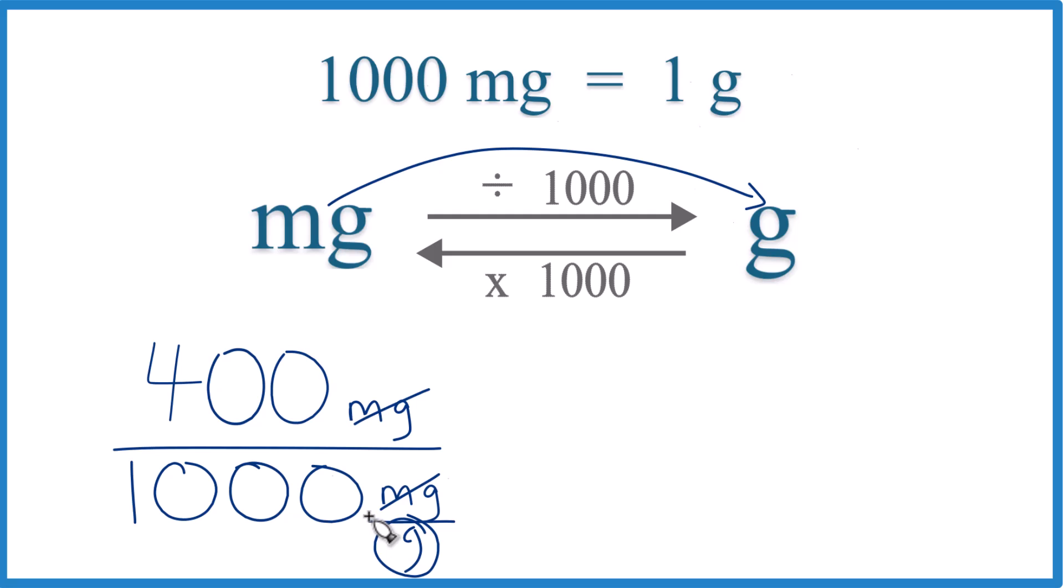So let's move the decimal point 1, 2, 3, and now we're just dividing by 1. But we also need to move the decimal point up here, 1, 2, 3, and now 400 milligrams equals 0.4 grams.